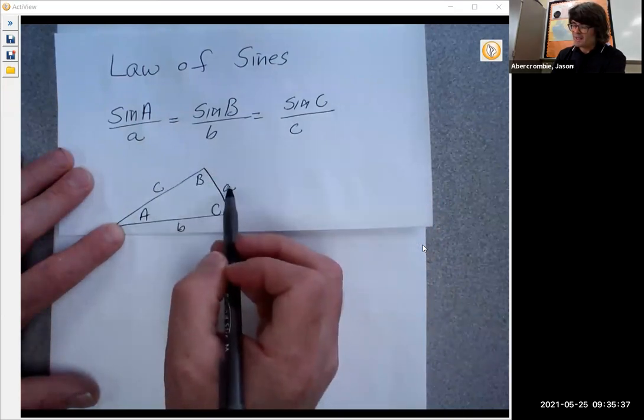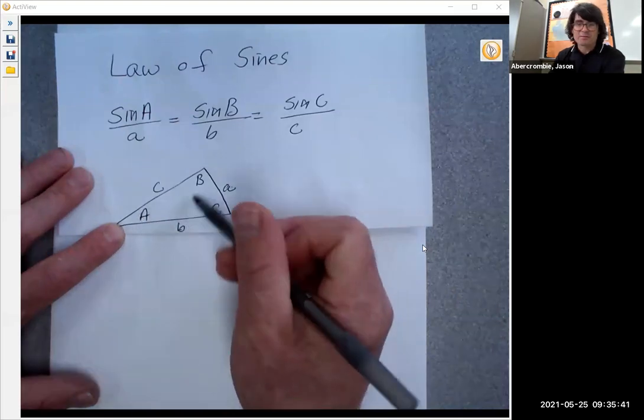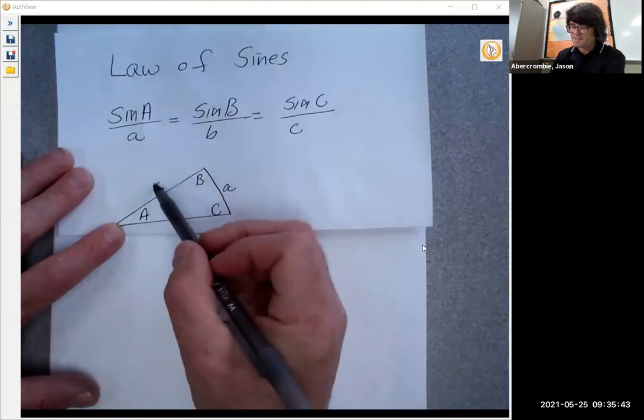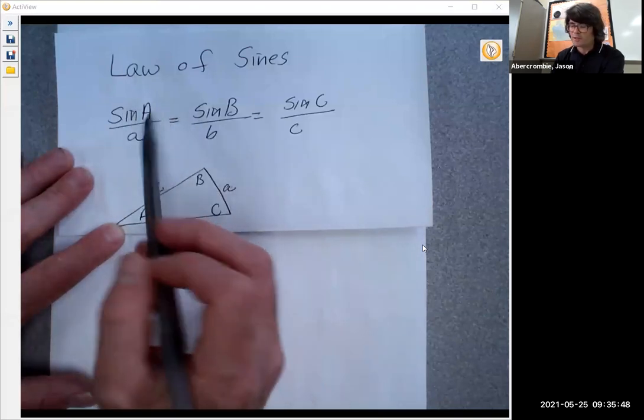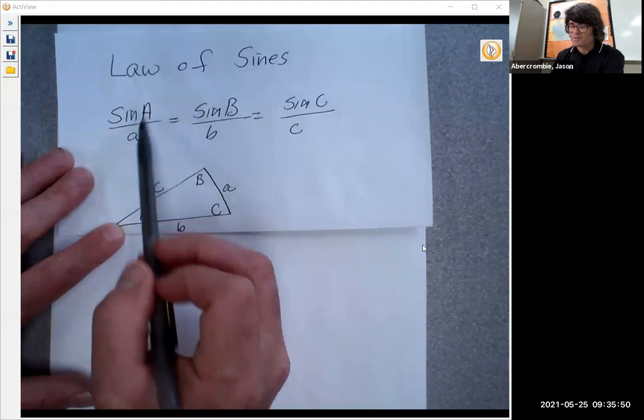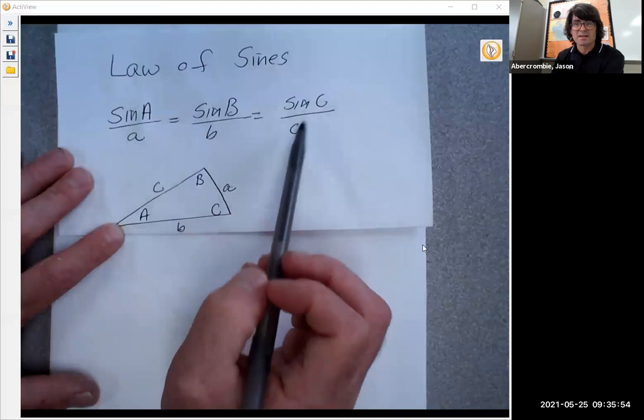Notice that side a is directly across from angle A. Side b directly across from angle B. Side c directly across from angle C. And now I've got this equation set up where I just have sine of A over its side, sine of B over its side equals sine of C over its side.